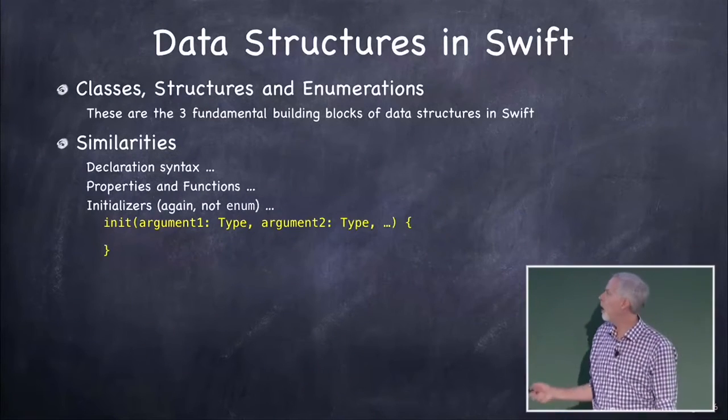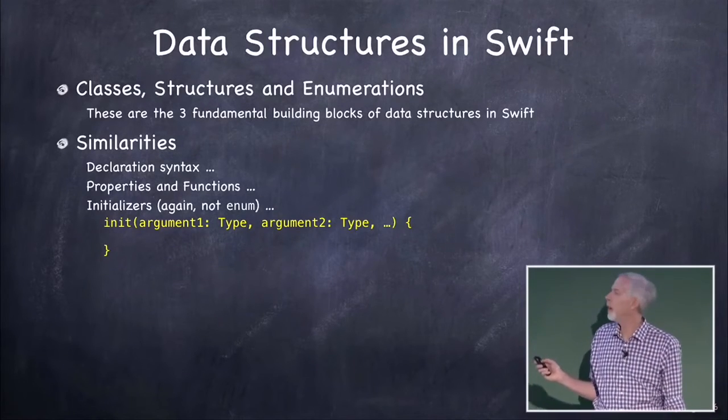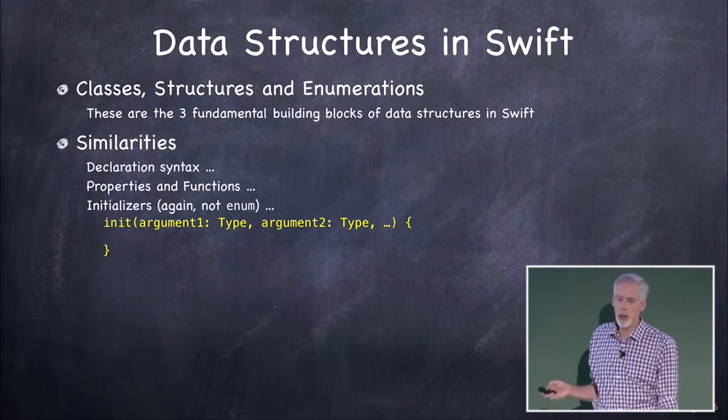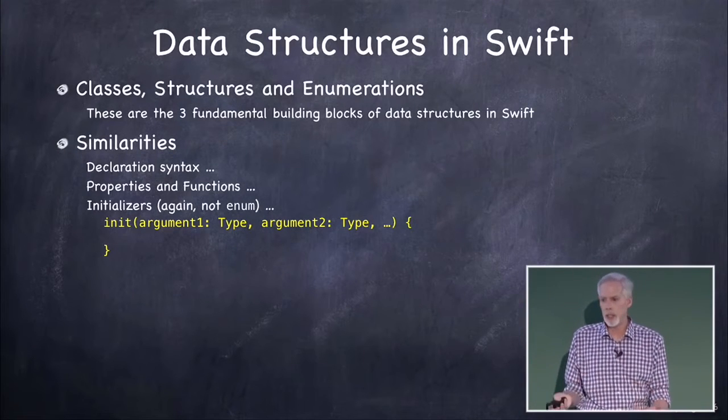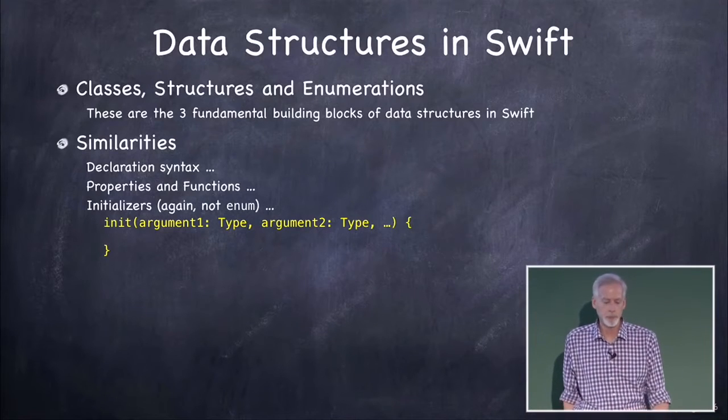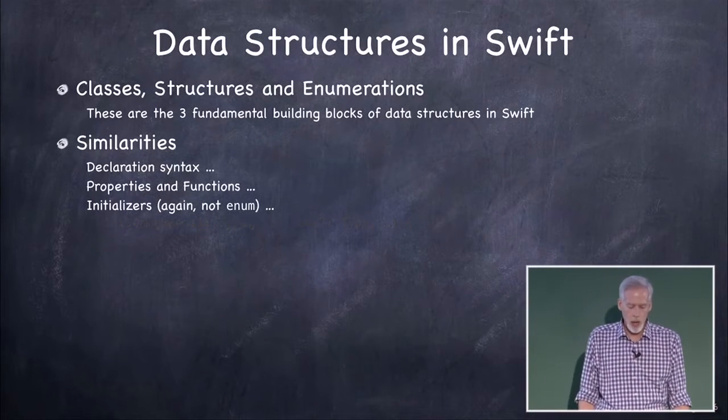Alright, they all can have initializers. We haven't talked much about initializers yet. We're gonna get that today. And so they're all allowed to have initializers, except enum. Obviously enum doesn't need an initializer, because you just set it to the discrete value with its associated values.